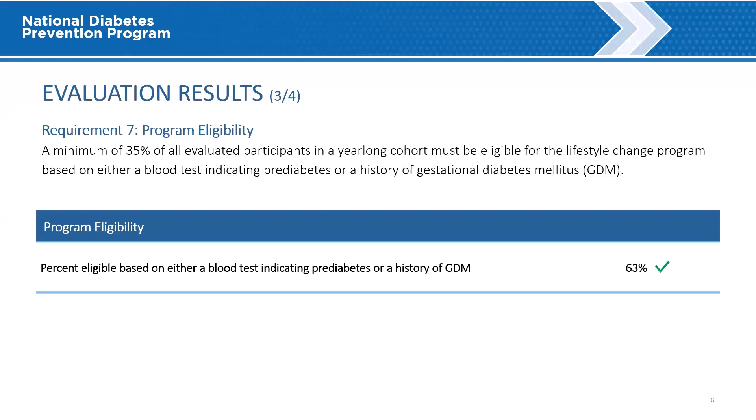Evaluation Results, part 3 of 4. Requirement 7 states that a minimum of 35% of all evaluated participants in the evaluation cohort must be eligible for the lifestyle change program based on either a blood test indicating pre-diabetes or history of gestational diabetes mellitus, GDM. The green check indicates that the organization has met this requirement with 63%.